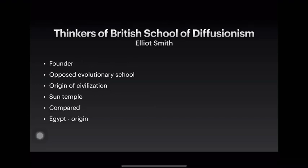Coming to the thinkers of the British school, we first have Elliot Smith. Elliot Smith is considered to be the founder of the British school of diffusionism. He opposed the evolutionary school. He published a book called The Origin of Civilization. He went to Egypt and studied about Egypt and Egyptians and also the Sun Temple. He compared Egypt and Cambridge in Britain, found many similarities, and emphasized that Egypt is the origin of cultural civilization. He was a diffusionist as well as an Egyptianist.